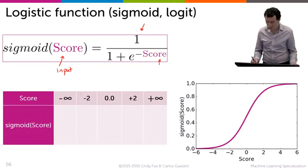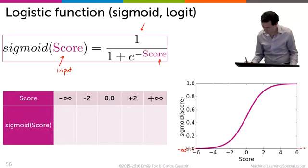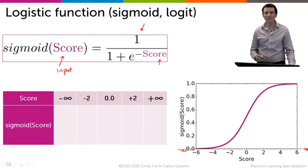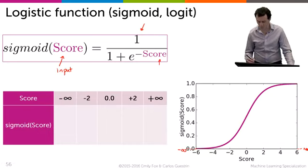So at the bottom here, I'm plotting the score, which can range from minus infinity to plus infinity. And let's see what happens when you take that score and push it through the sigmoid.